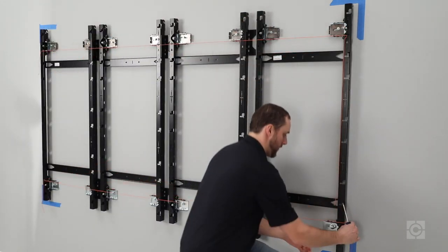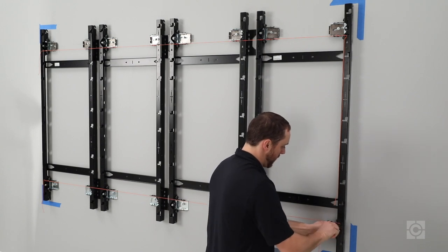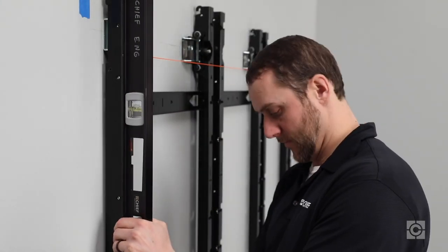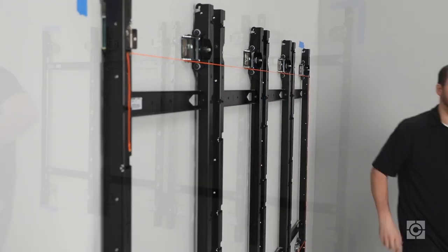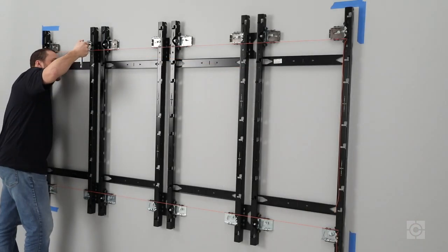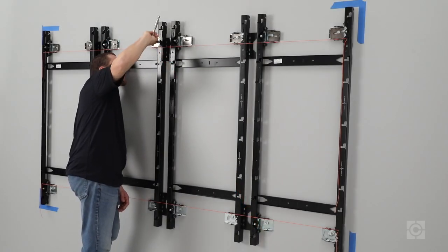Attach a secondary plumb line near the lower adjustment points on the mounts. Re-check and, if necessary, adjust the vertical level of the outermost uprights in the video wall. Then, adjust the depth of each upright to the plumb line in the center of the video wall.